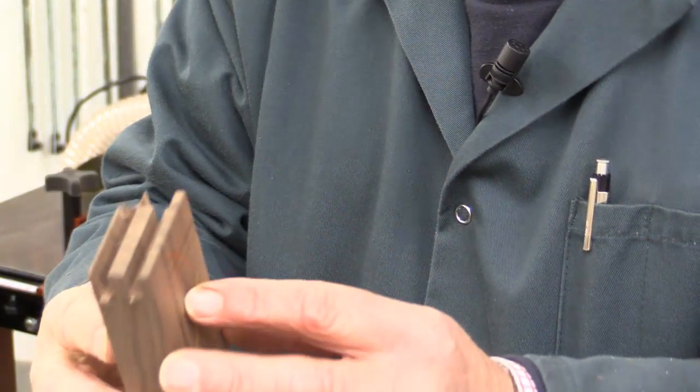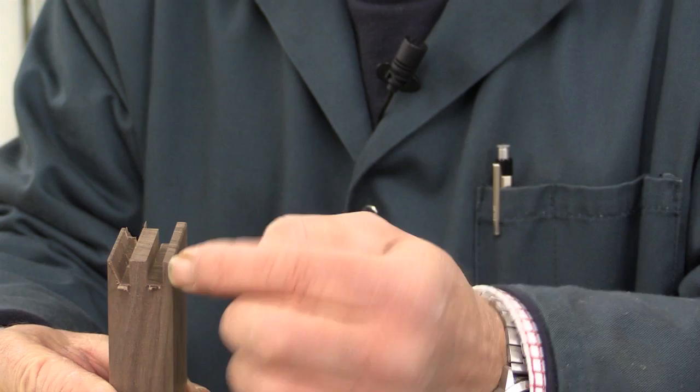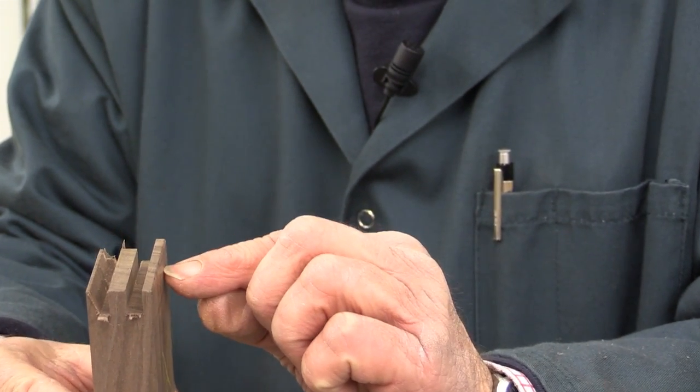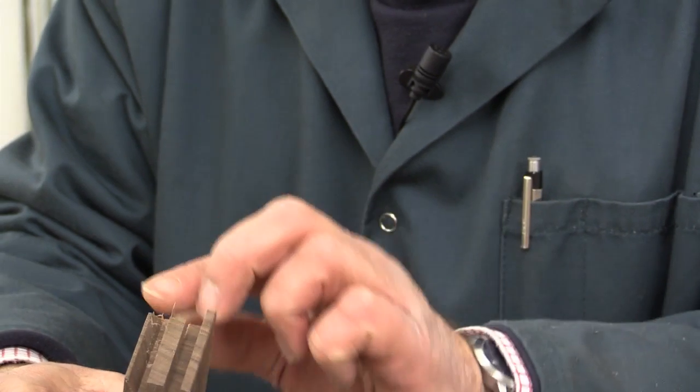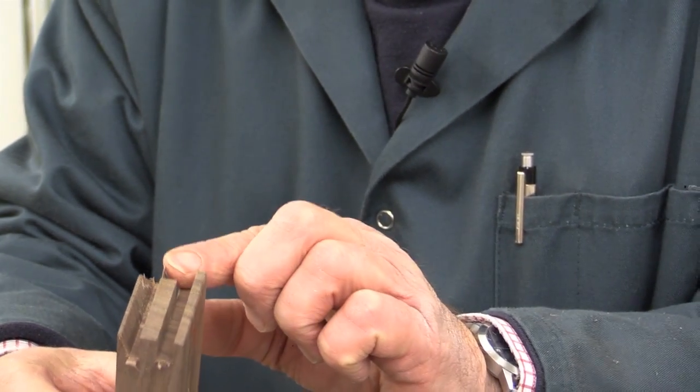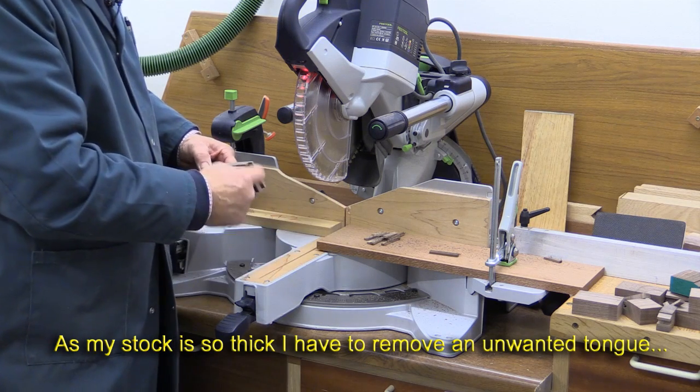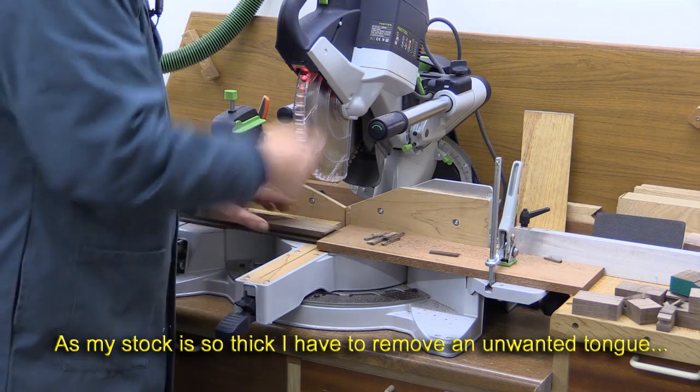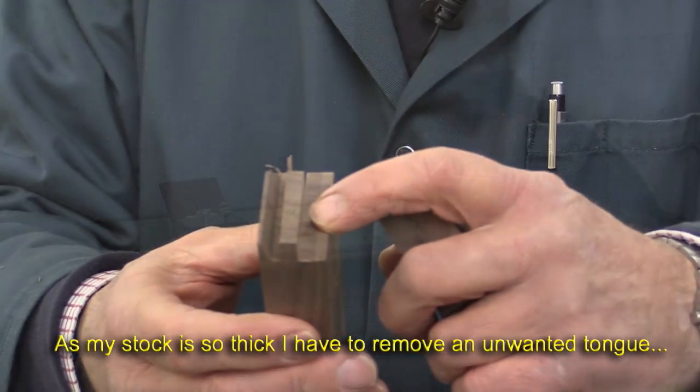The thing is, because of this arrangement with the cutters, I've got an extra bit of tongue which I have to get rid of, which is here. Because ordinarily, when you're using this cutter, you're using stock which is less than 22 millimeters. And I've set up a little jig here so I can cut these extra tongues off very simply. Well, I've removed that extra bit of tongue from there.